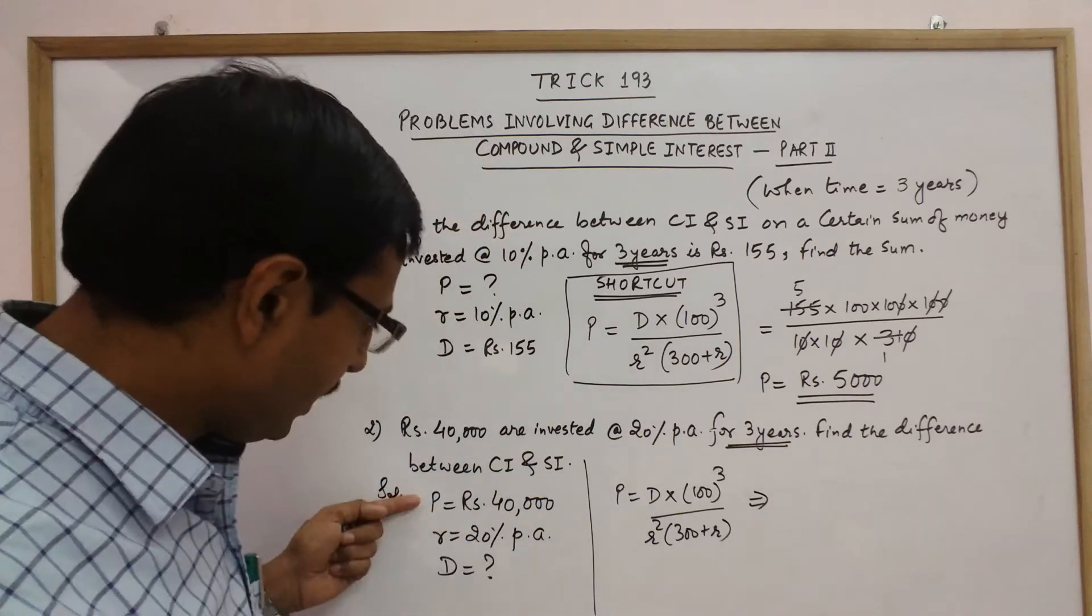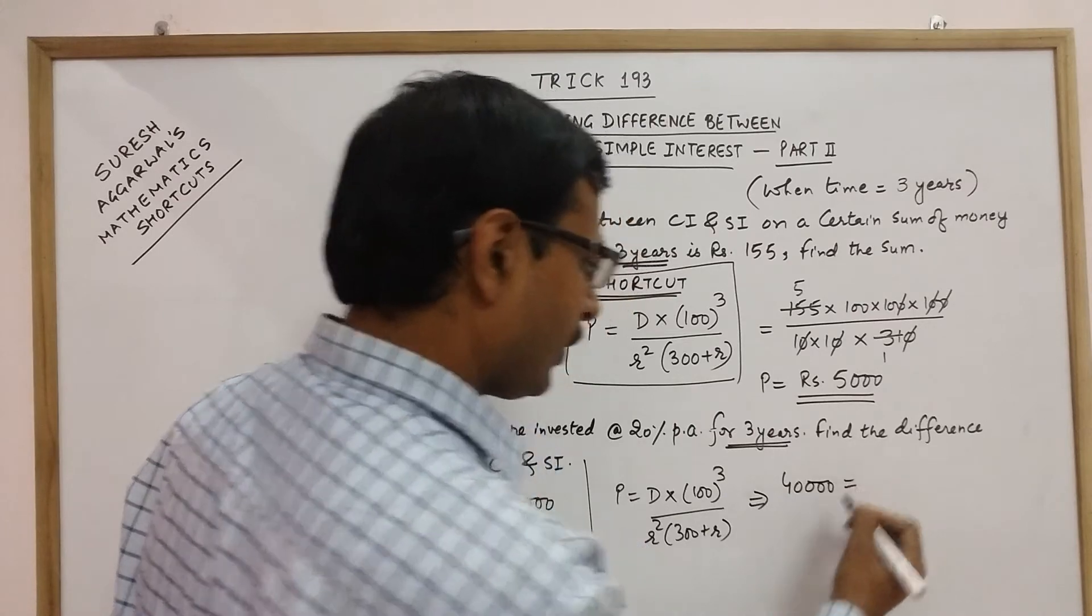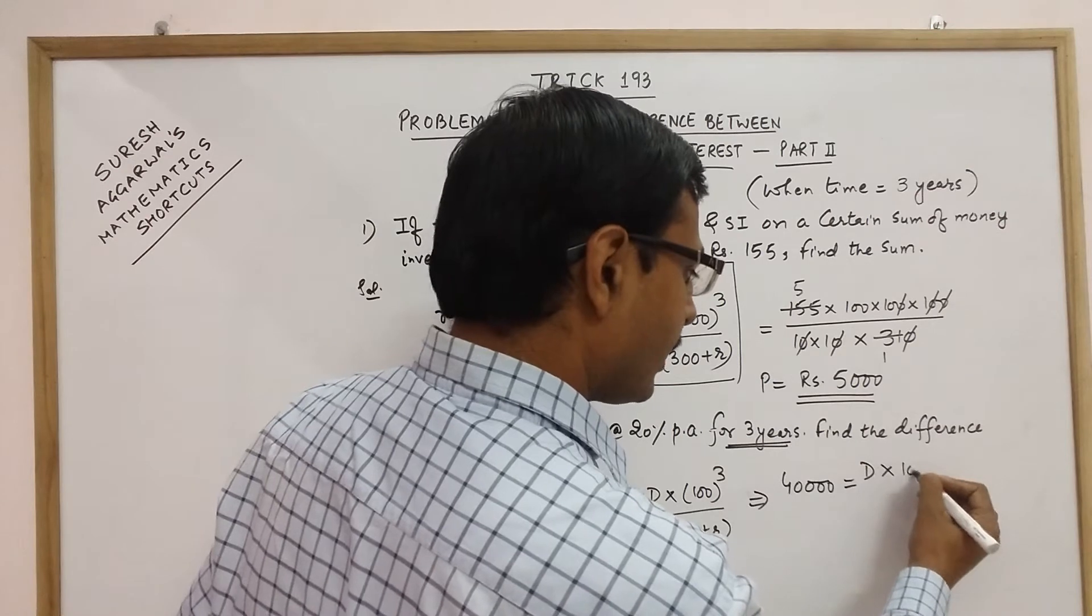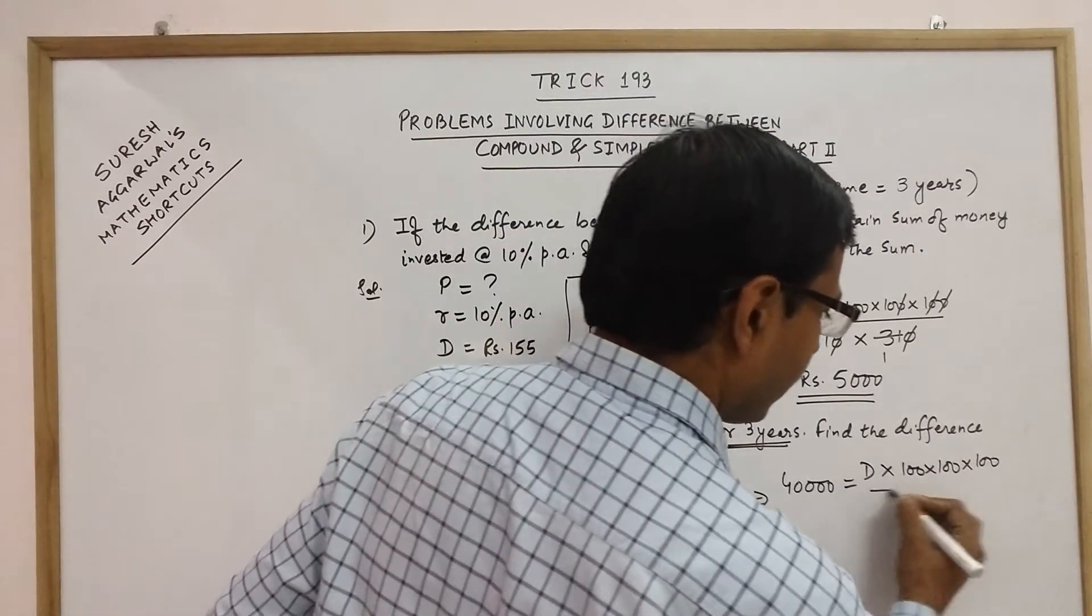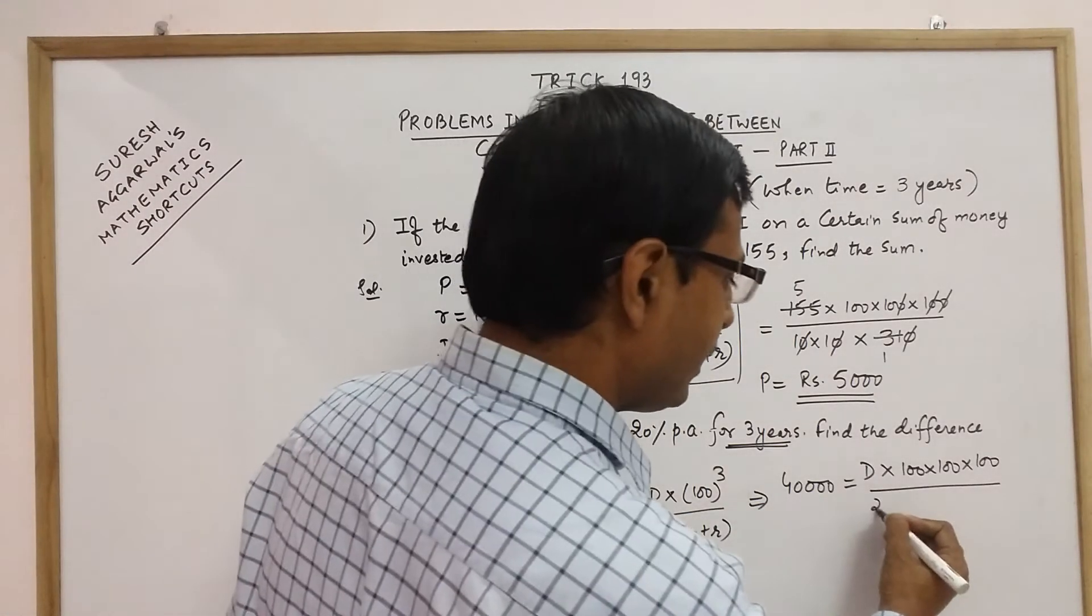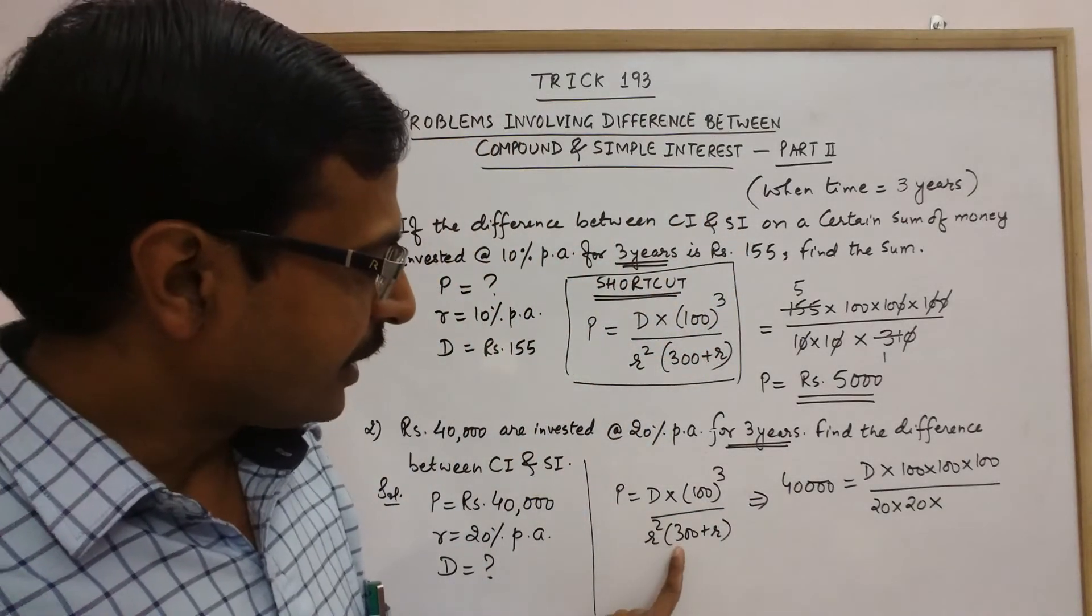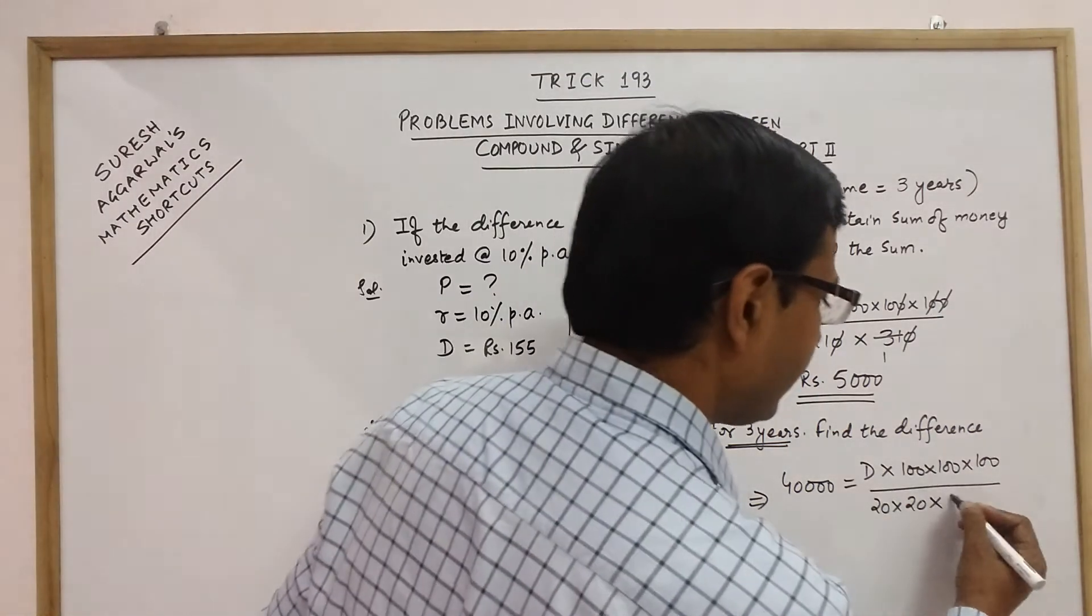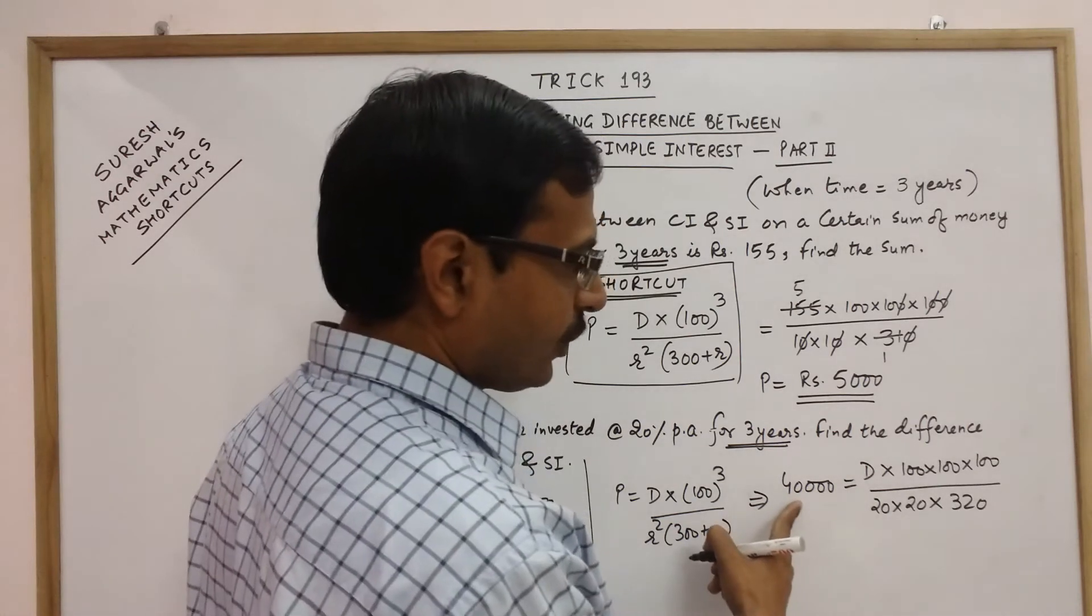Now see what all we are given. P is 40,000, so 40,000 equal to D we need to find out. So D will remain as it is into 100 three times upon R. Now R is 20%, so R square is 20 into 20. And the final term is 300 plus R, so 300 plus R is 20, so 320.